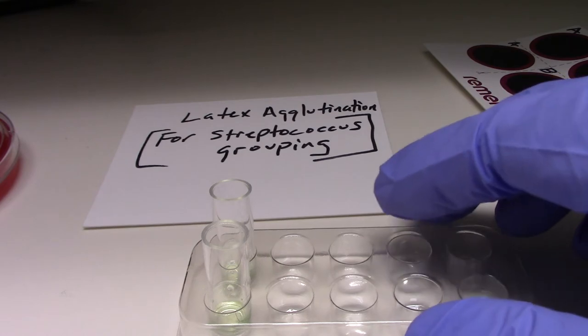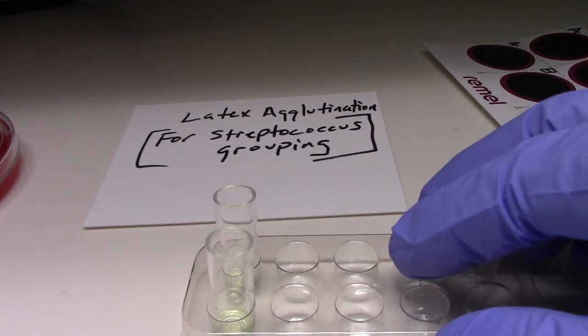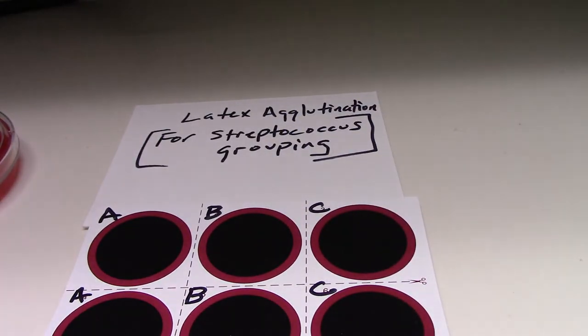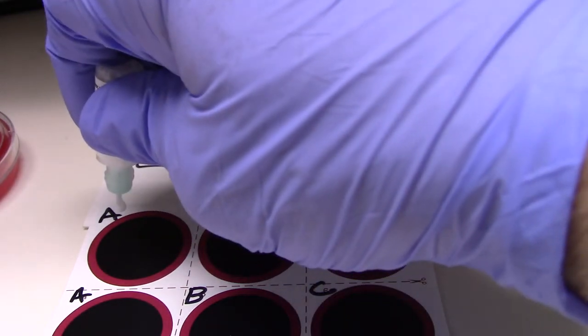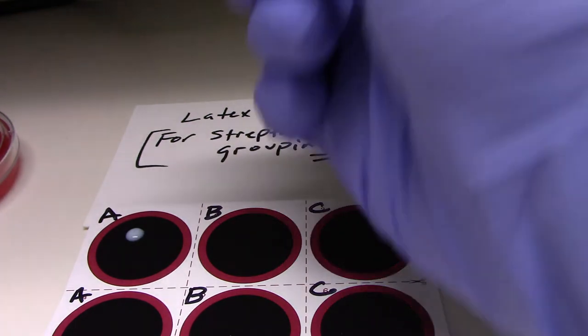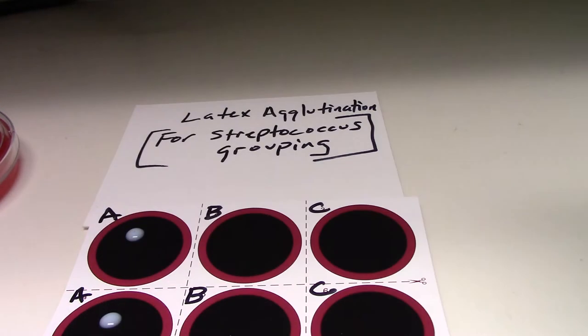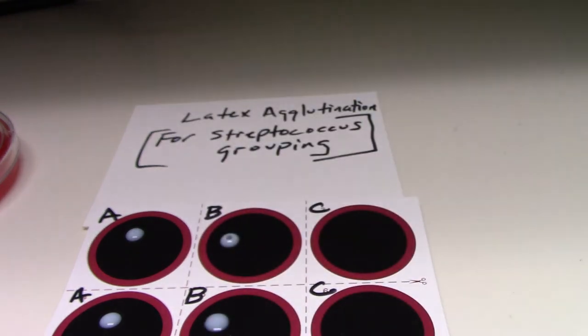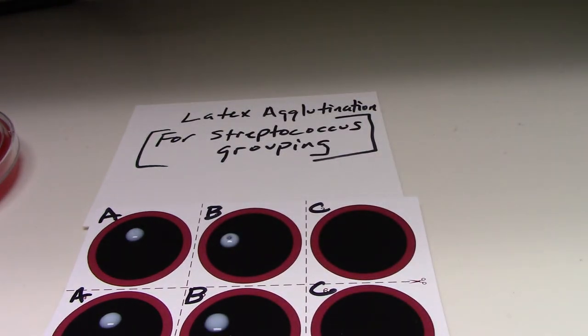And what I'm going to do is, while this is incubating, I'm going to put the latex on our card here. So we have antibody for A, latex coated, antibody for B, and a polystyrene latex, and C.